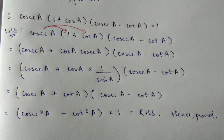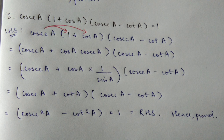In question number six, cosec e plus cos e — expand the bracket and multiply. Cosec e into 1 gives cosec e, and cosec e into cos e gives cosec e times cos e. So we have cosec e plus cos e into cosec e, where cosec e equals 1 by sin A and cos e by sin A equals cot e. Using cosec e plus cot e into cosec e minus cot e — this is A plus B into A minus B — giving cosec square A minus cot square A, which equals 1, hence proved.